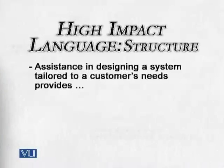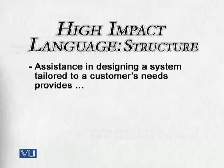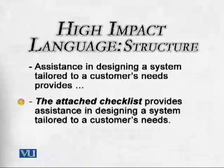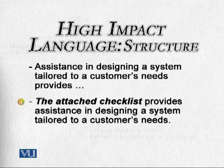The second point of high impact sentences is: put the subject first. Every sentence should have its subject first, then verb second, then object third. For example, the sentence 'Assistance in designing a system tailored to a customer's needs provides' has no subject, which confuses the reader. The corrected version is: 'The attached checklist provides assistance in designing a system tailored to a customer's needs.' Subject is very important for correct meaning.